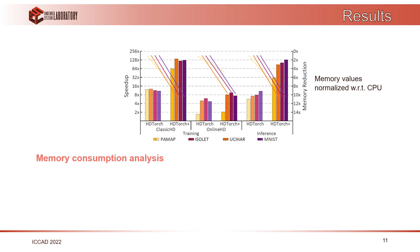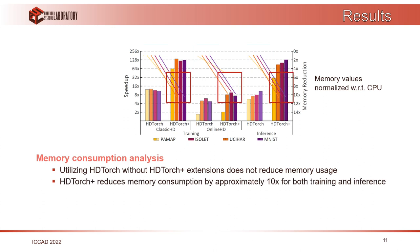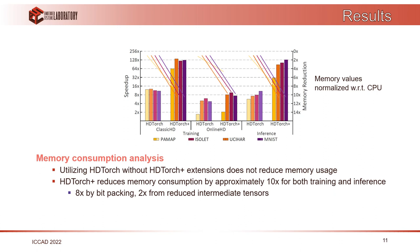Looking at memory consumption shown with the lines on the right axis, using HDTorch without CUDA extensions does not reduce memory. But implementing the extensions such as bitpacking reduces memory up to 10 times — 10x from bitpacking itself and an additional 2x from reduced intermediate tensors.